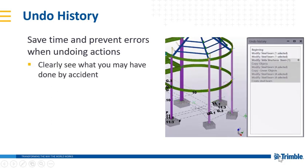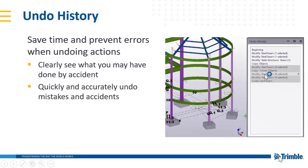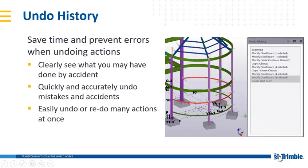You can clearly see what you may have done by accident. If you accidentally copied something at one point in time and didn't realize you'd done that, you can go back and undo that. It makes it easy to quickly and accurately undo mistakes and accidents, as well as to easily undo or redo many actions at once.